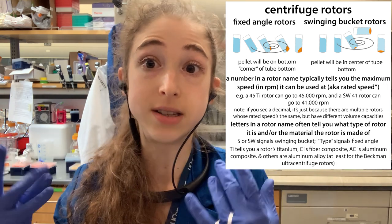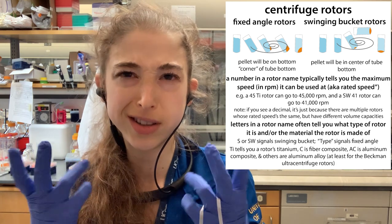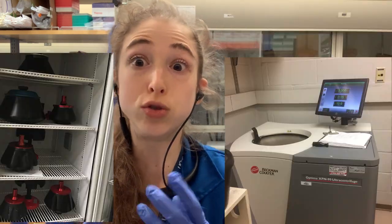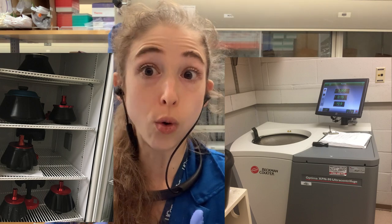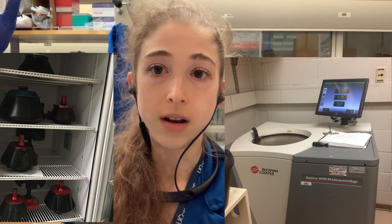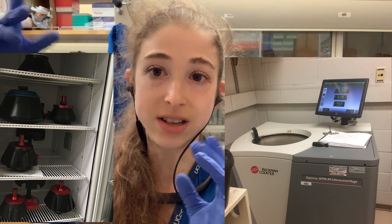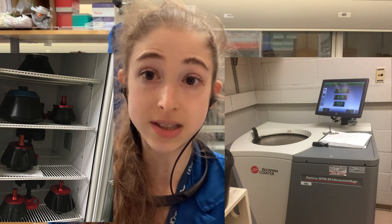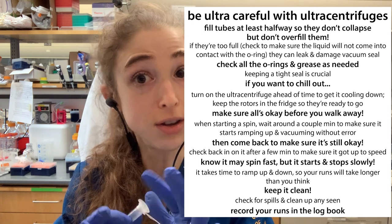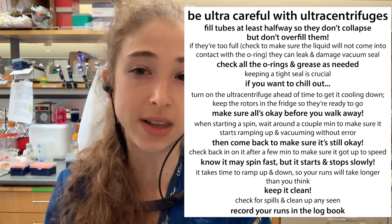We can talk about normal centrifuges that go up to a certain speed, and then ultracentrifuges that go super fast — up to 40,000, 70,000, or even 100,000 RPM. There's going to be a lot of force on those tubes, so you want to make sure you're using special tubes rated for those conditions.